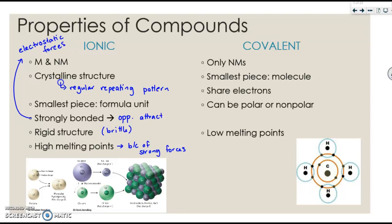Covalence, on the other hand, are only nonmetals. The smallest piece is called a molecule. They are going to share electrons. They can be polar or nonpolar. We are going to cover that in more detail later.